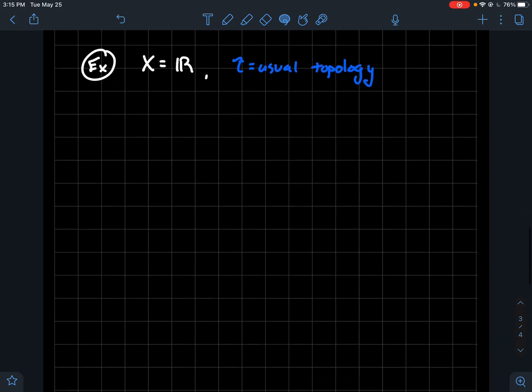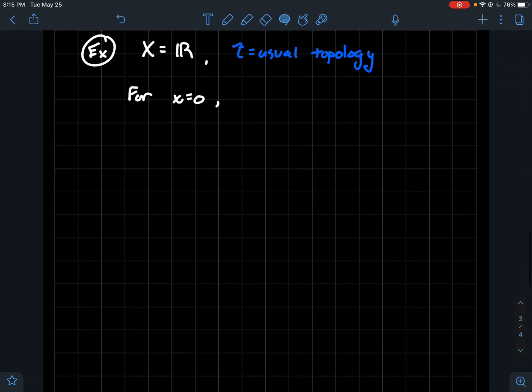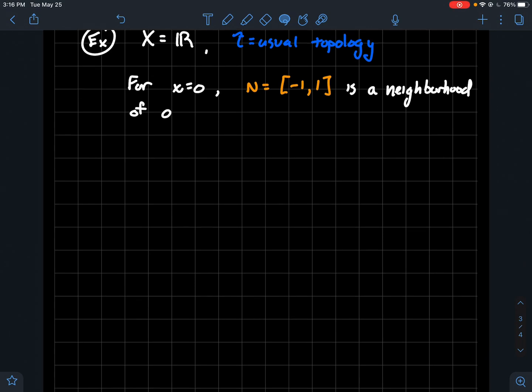So let's do another example. Let's say X is the real line and T is the usual topology. Think about like college algebra, where you have parentheses on both sides of your interval. And so the things that are open are anything that you can make where you're taking any union you want of those intervals, or maybe finitely many intersections of those intervals. And so let's just take zero, x is zero. And let's look at the interval, close brackets, minus one to one. I mean, all real numbers between minus one to one inclusive, that's a perfectly fine neighborhood of the point zero.